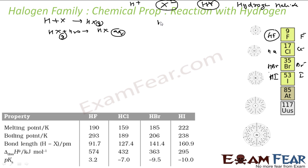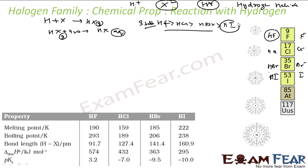Stability order: HF > HCl > HBr > HI. HF is most stable and HI is least stable. Since HI is least stable, it is the strongest acid. Because it is least stable, it breaks easily into H⁺ and I⁻.